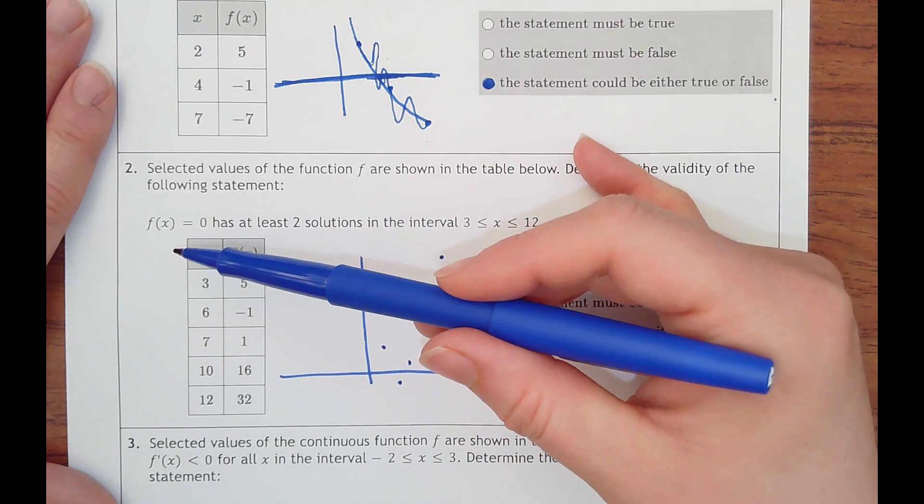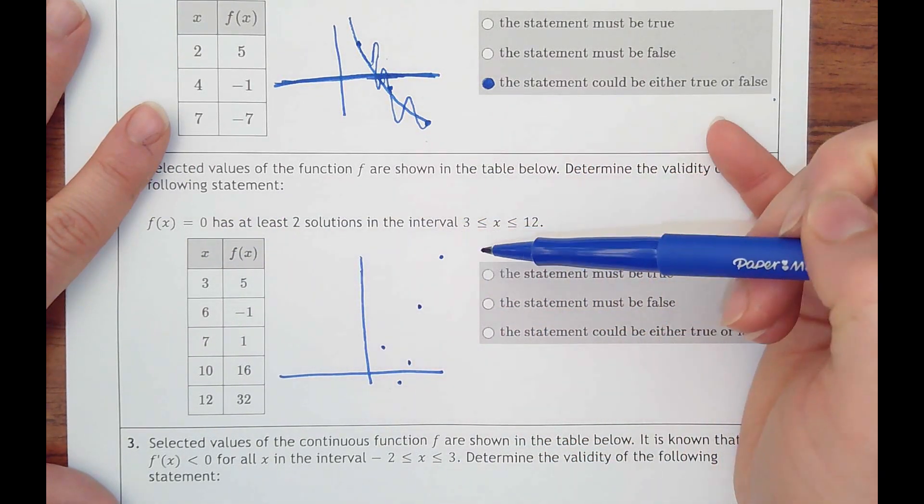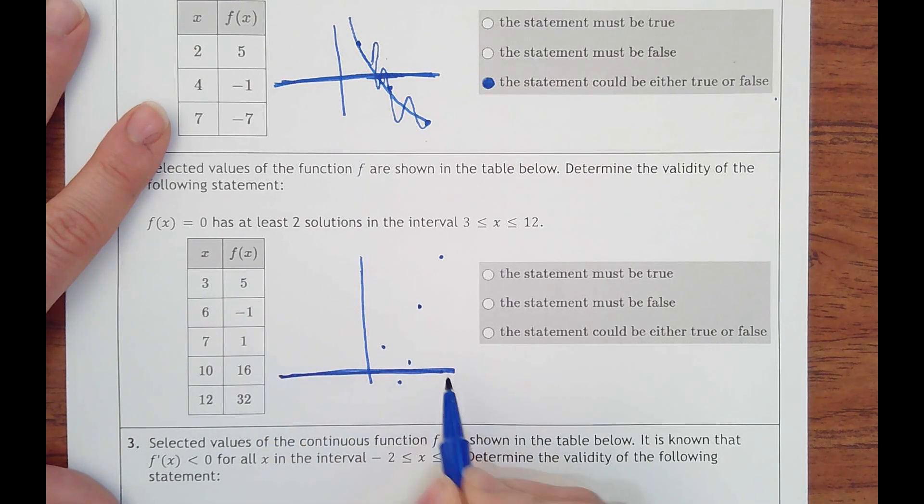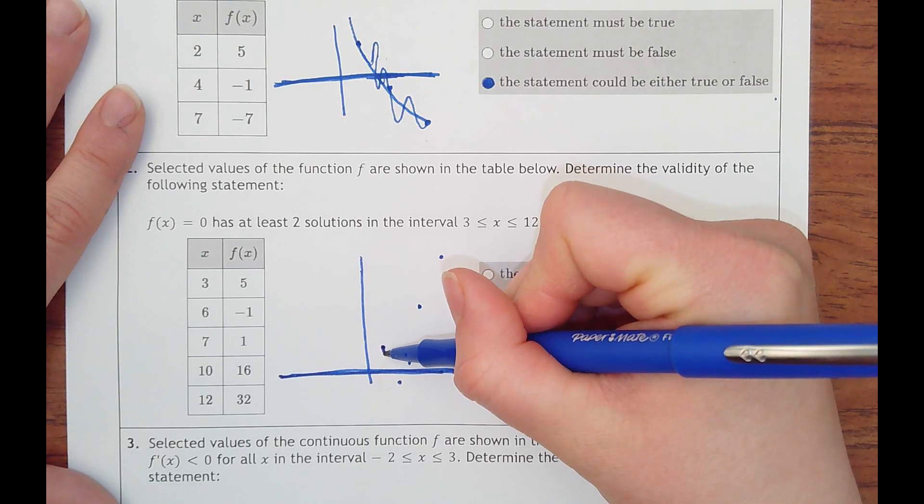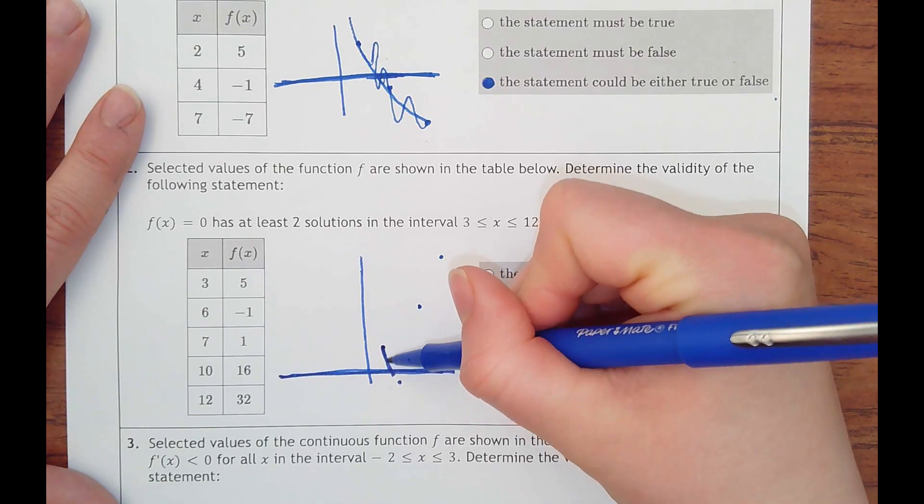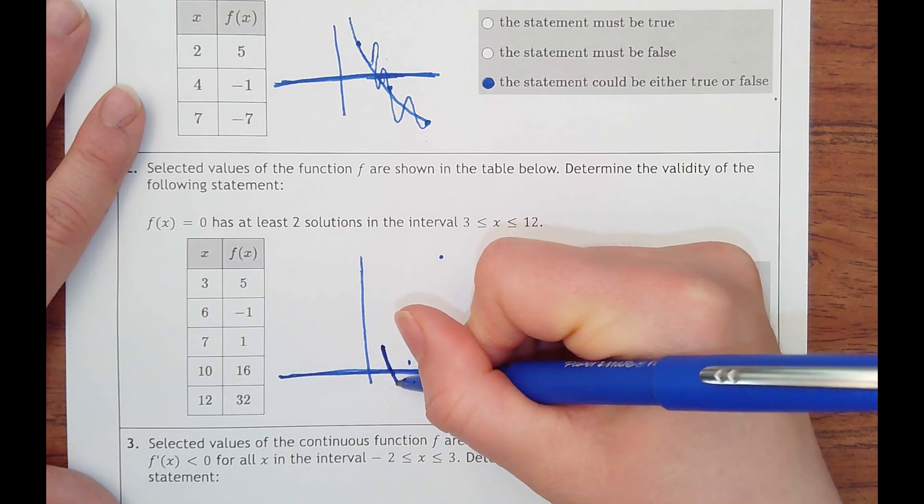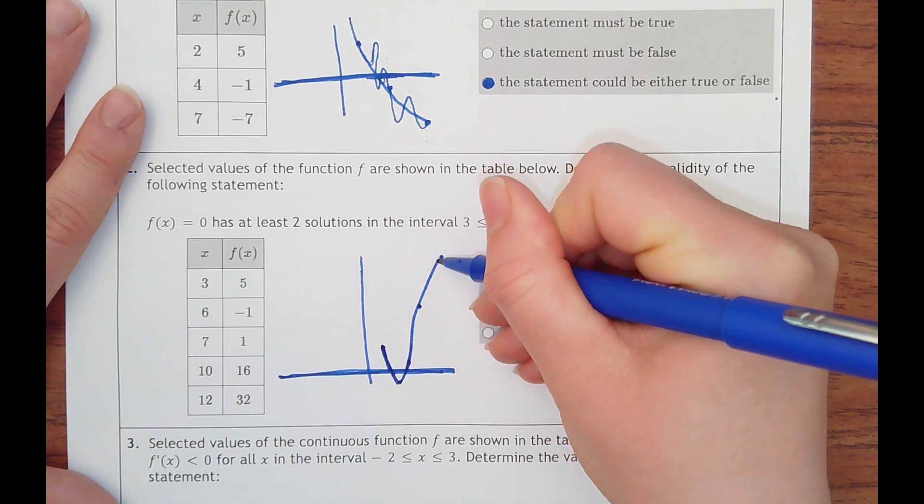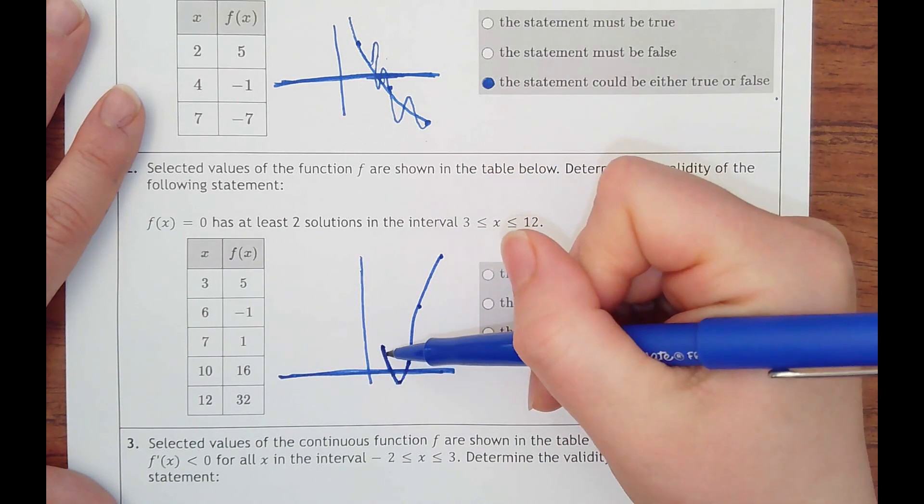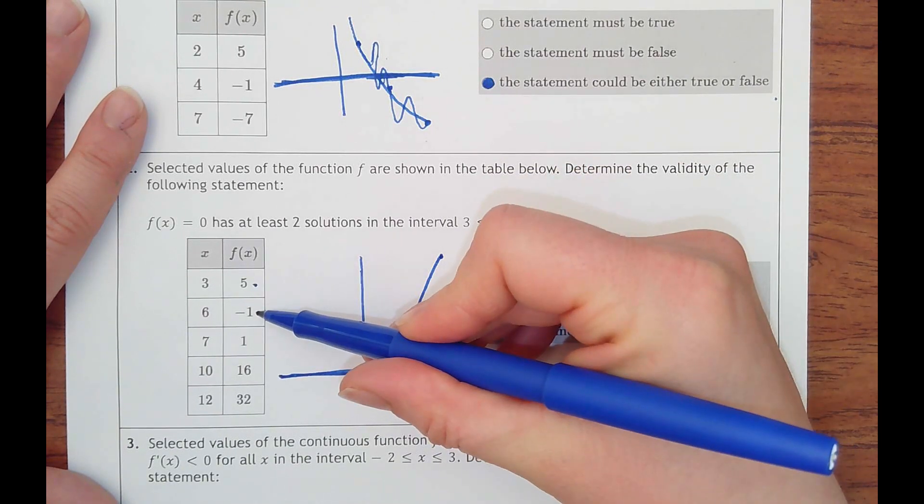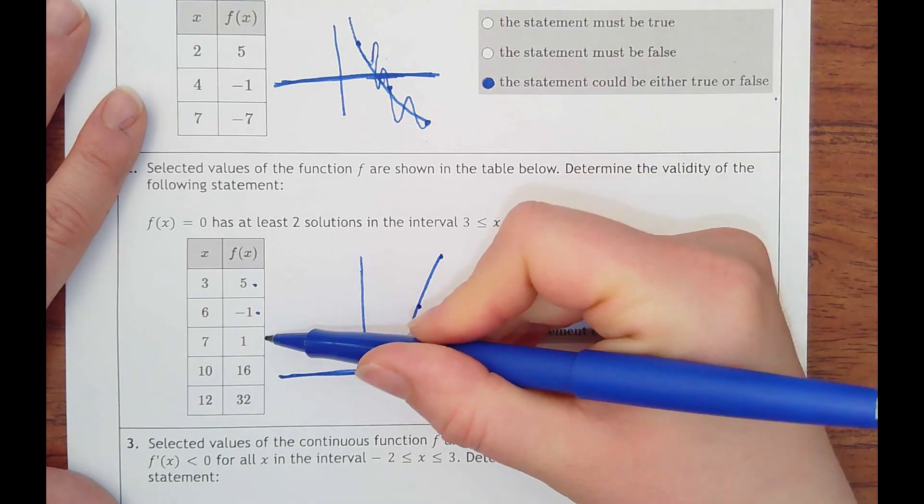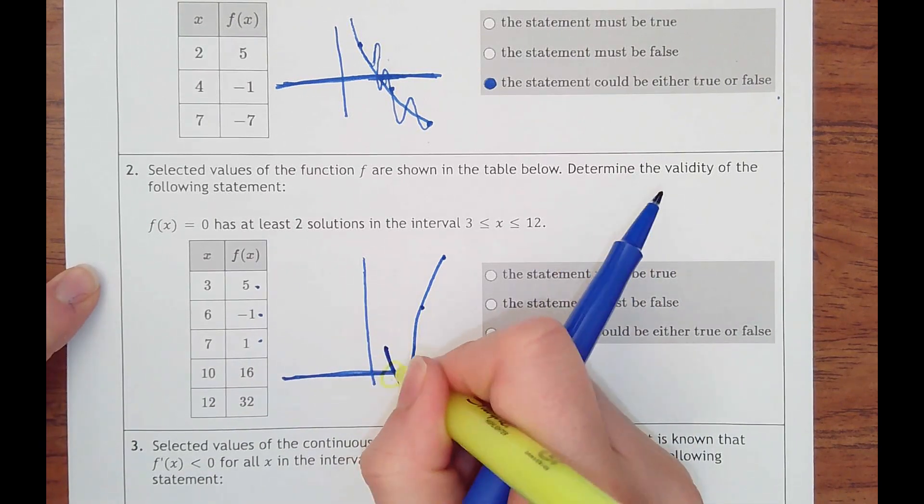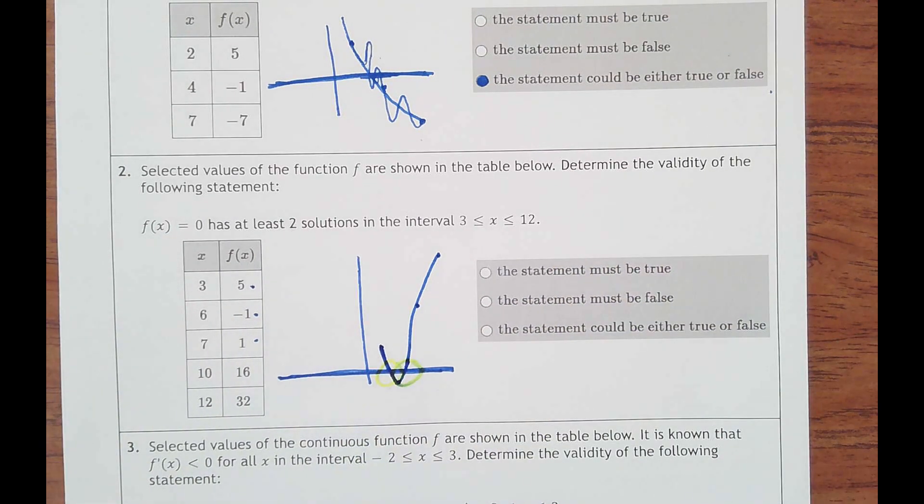We are asked f of x or y equals zero has at least two solutions in the interval. So does it cross through here twice? At least twice, I should say. So it goes through once and then it looks like it just does this. So it goes from positive to negative y back to positive y. So yeah,